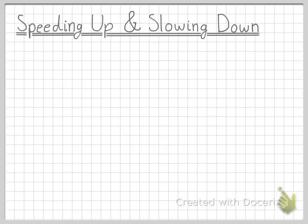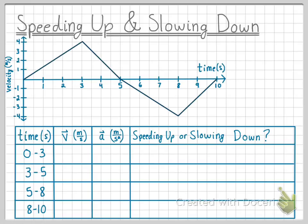To further discuss this idea of speeding up and slowing down, we are going to analyze this velocity versus time graph. There are four distinct intervals within this graph that we are going to analyze — the velocity, acceleration, and whether the object is speeding up or slowing down based on its initial and final velocities. For this analysis, we don't really care what the actual values are; we just want to know their signs, so within the velocity and acceleration columns we are simply going to put whether it is positive or negative.